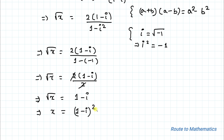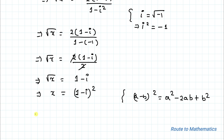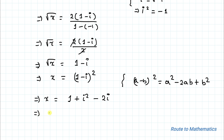In order to find the value of x, we square both sides of the equation. So x equals (1 minus iota) whole squared. Applying the identity (a minus b)² equals a² minus 2ab plus b², with a equals 1 and b equals iota, this gives x equals 1 plus iota squared minus 2 iota, which equals 1 minus 1 minus 2 iota. The 1 and minus 1 cancel, giving x equals minus 2 iota.